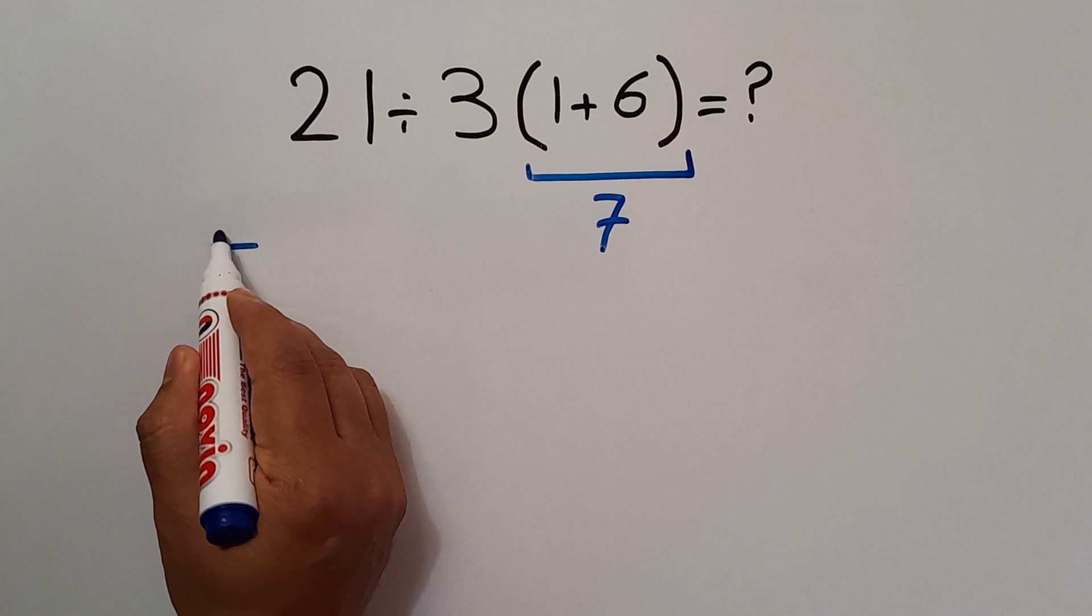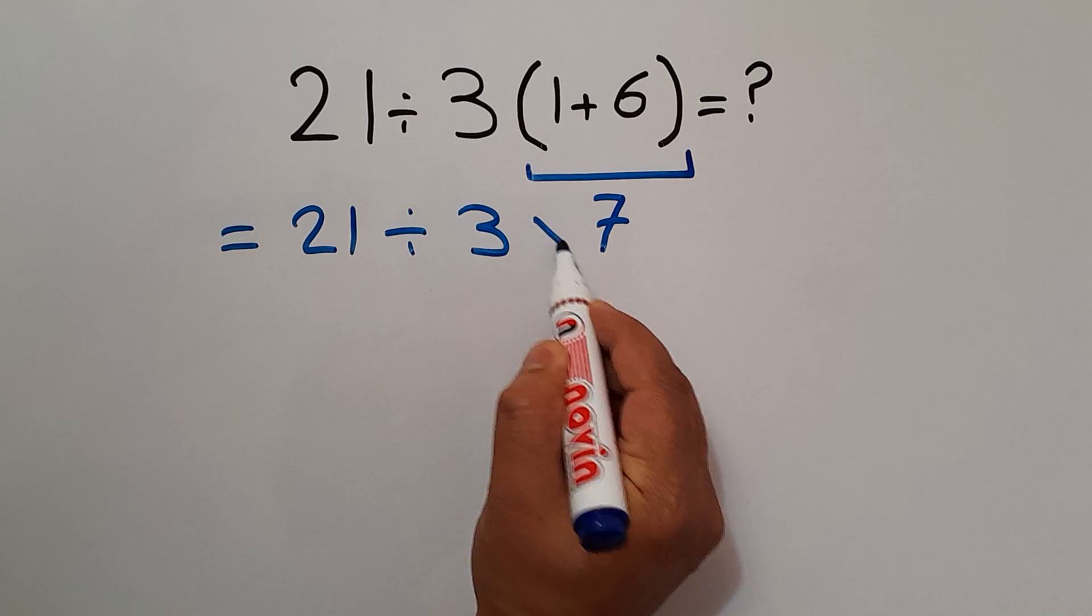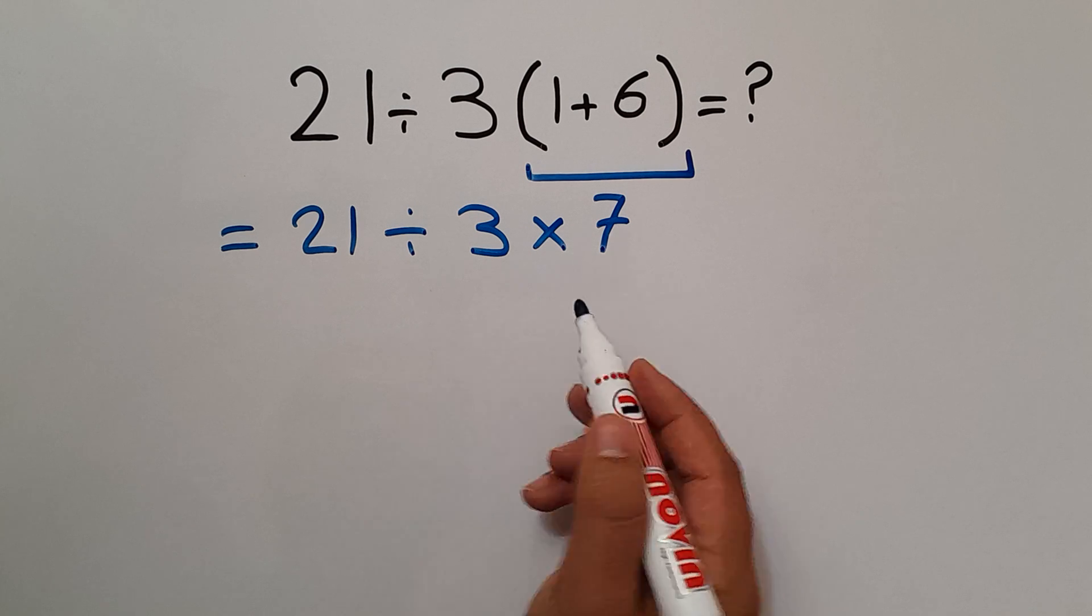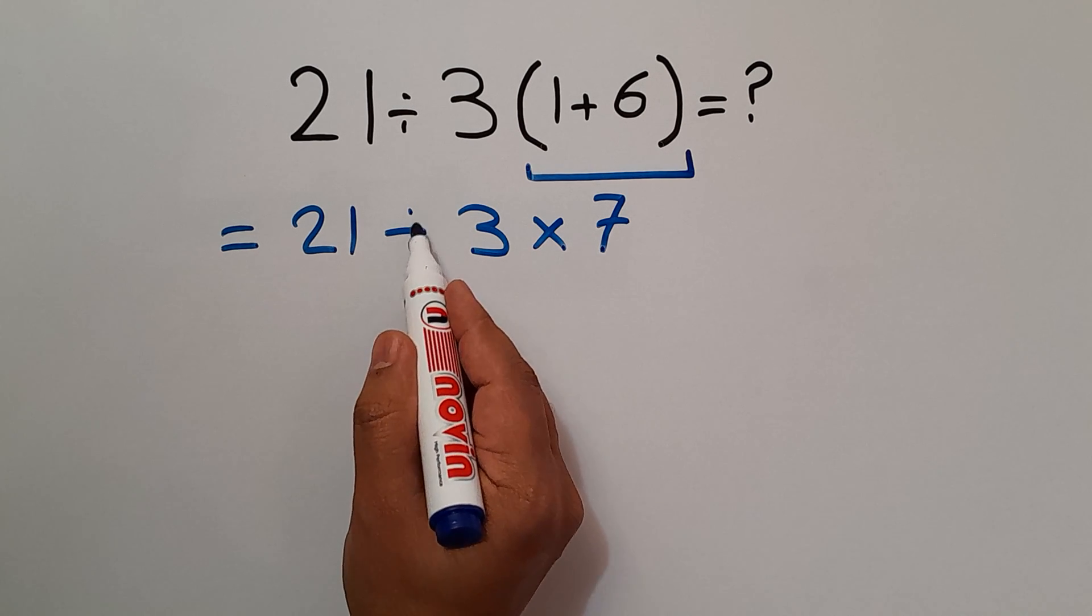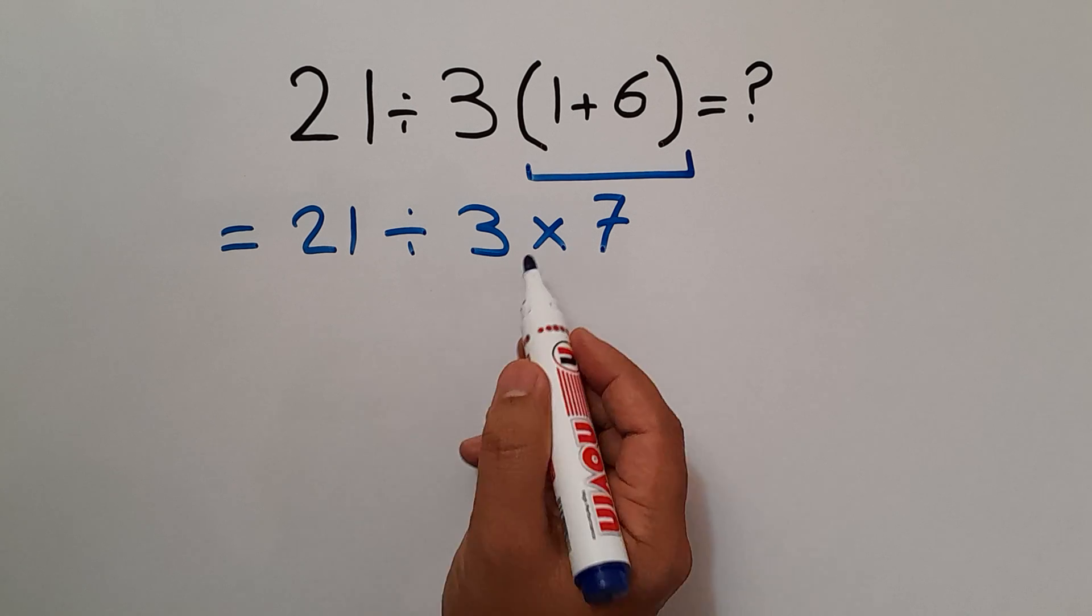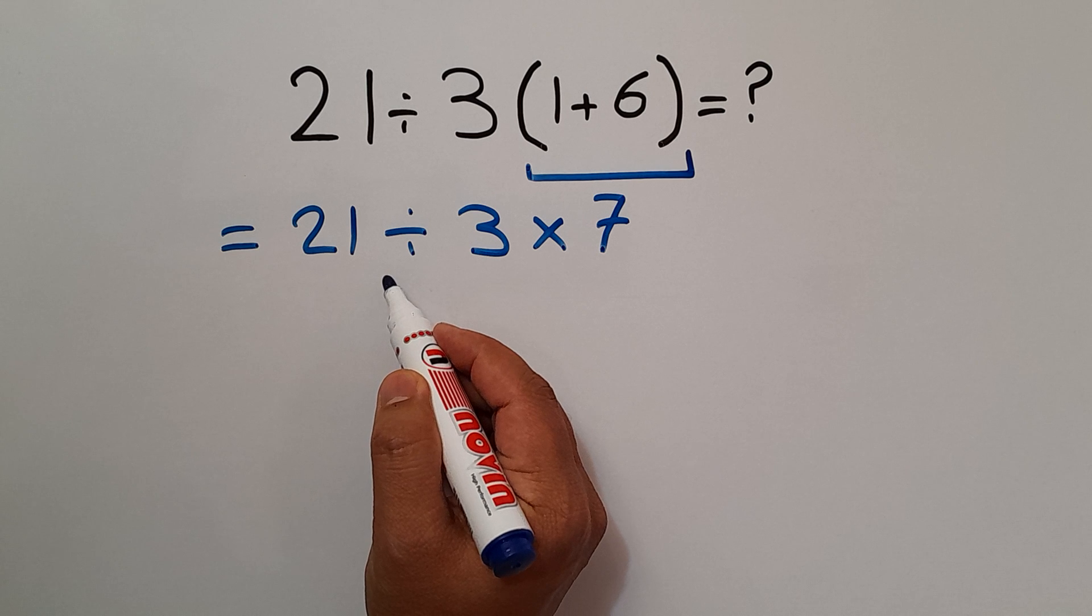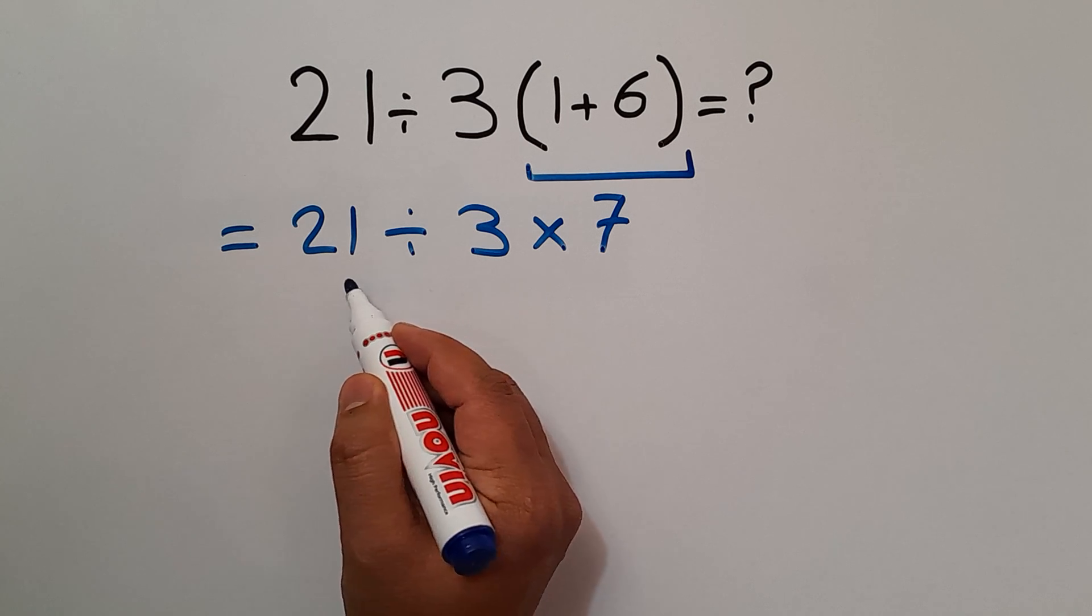So we have 21 divided by 3, then times 7. And now we have one division and one multiplication. As we know, multiplication and division have equal priority and we have to work from left to right.